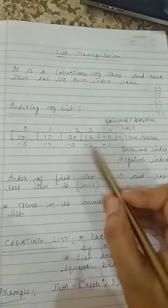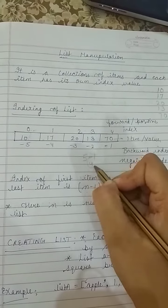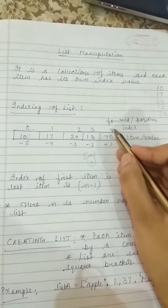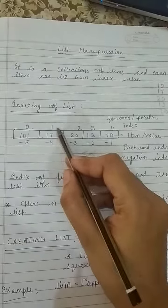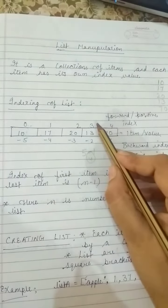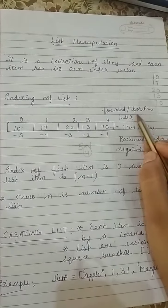So 5 minus 1 equals 4. The index value of the last item is 4. It starts with 0 and then 1, 2... moving forward. That's why this type of index value is known as forward or positive index.